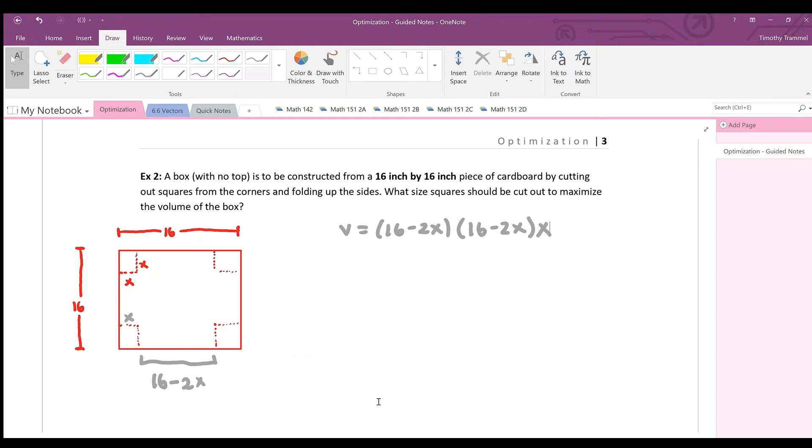So now that we have our objective function, you might be thinking, what's our constraint going to be? Well, we actually don't have one, and we don't need one. We don't need one because we only have one variable. We can take the derivative of this thing.